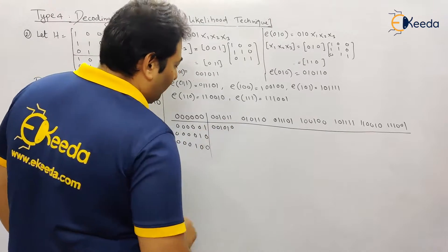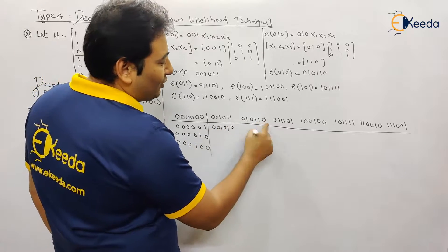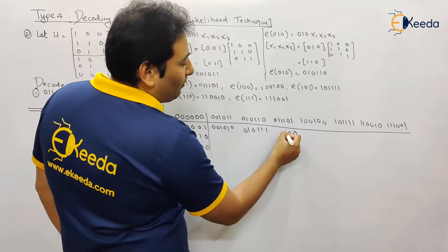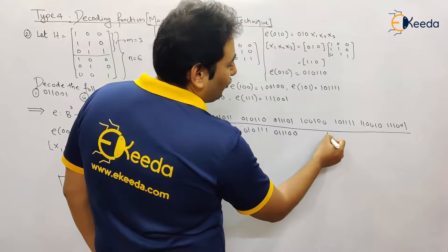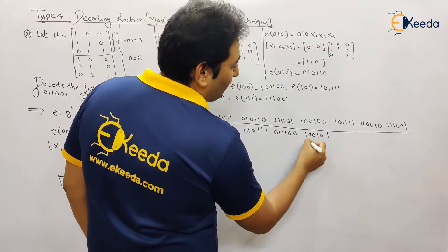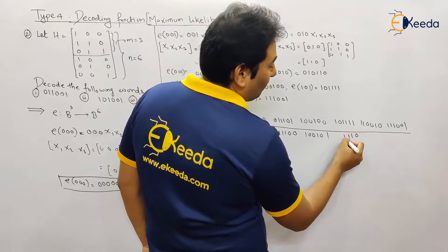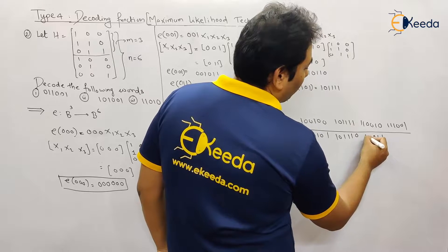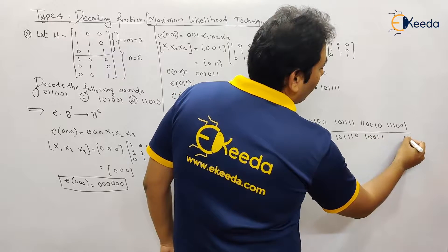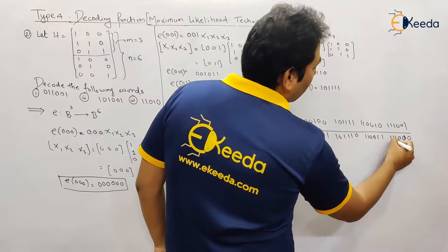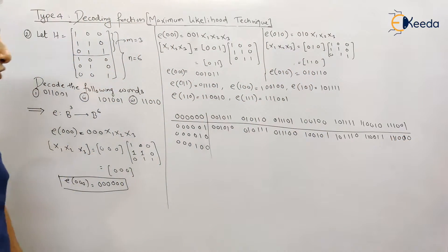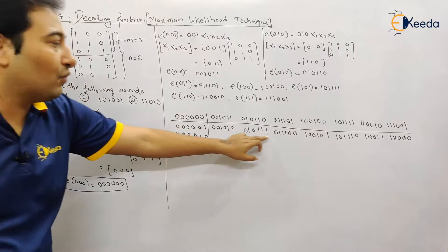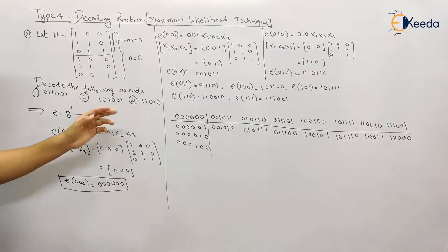Filling in the first row: this 1 becomes 0, this 0 becomes 1, the remaining entries stay the same. This 1 becomes 0, this 0 becomes 1. We continue updating each entry accordingly. We are done with the first row. Let us check — do we find any of the required words here? No, we are not finding any word here. So let's move on.